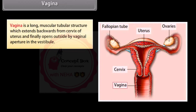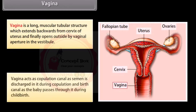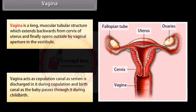The vagina is a long, muscular, tubular structure which extends backwards from the cervix of the uterus and opens outside by the vaginal aperture in the vestibule. The vagina acts as a copulation canal, as semen is discharged into it during copulation, and as a birth canal, as the baby passes through it during childbirth.